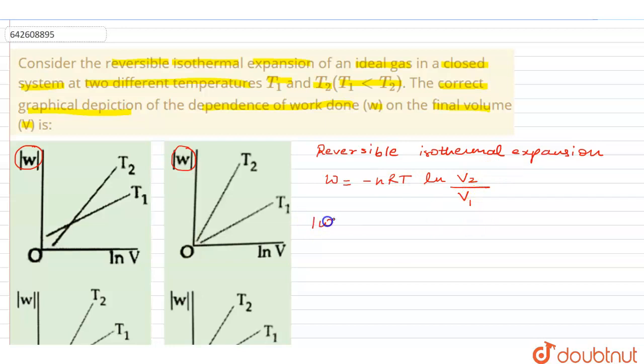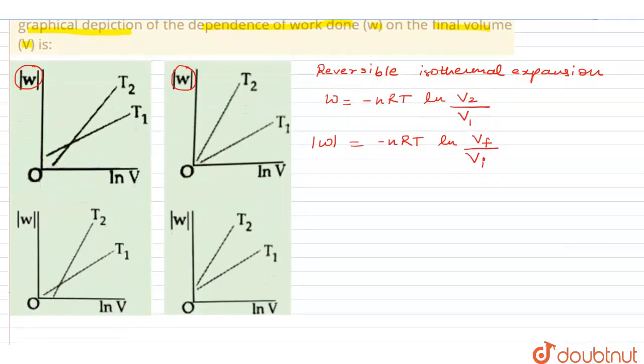So let us put it in the mod mode. So over here we would be putting it up as Vfinal by Vinitial. Now final is going to be on your x-axis as stated.